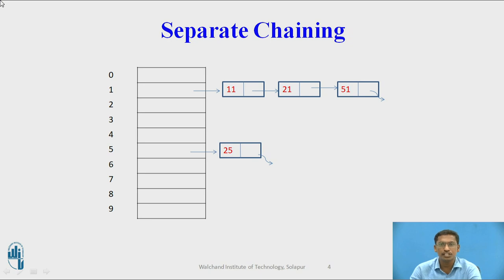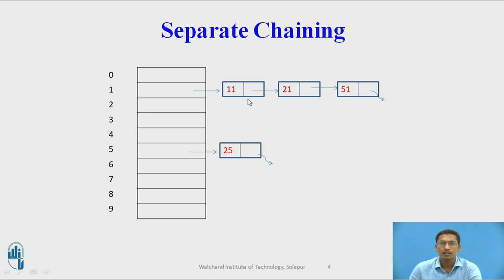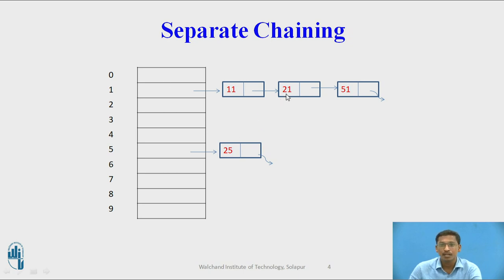This is a diagram for separate chaining. I have taken a hash table of size 10, indexed from 0 to 9. Suppose I want to insert 11, 21, 51, and 25. A separate linked list is created and elements producing the same hash value are stored in that linked list. So 11, 21, and 51 are stored in a separate linked list because all produce the same hash key, which is 1 — using hash function mod 10: 11 mod 10 = 1, 21 mod 10 = 1, 51 mod 10 = 1.